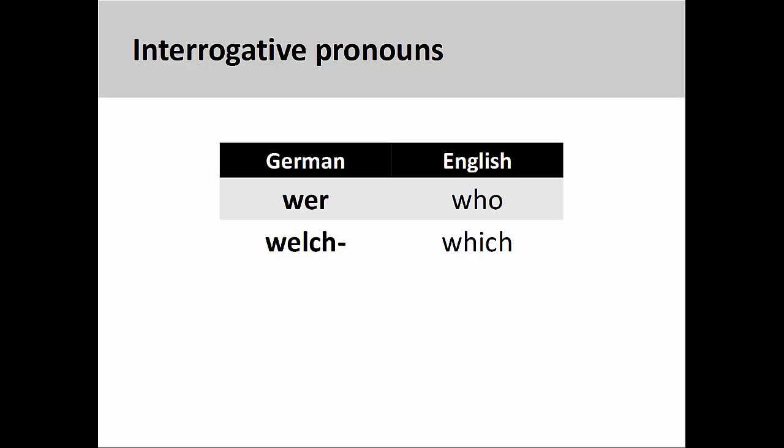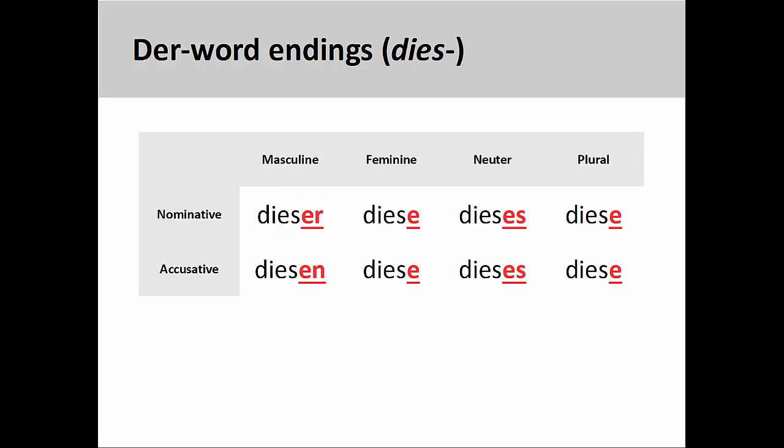These interrogative words are 'wer,' meaning 'who,' and 'welch,' meaning 'which.' It is important to note that the endings for these interrogative words are like the der-word endings we have already studied.